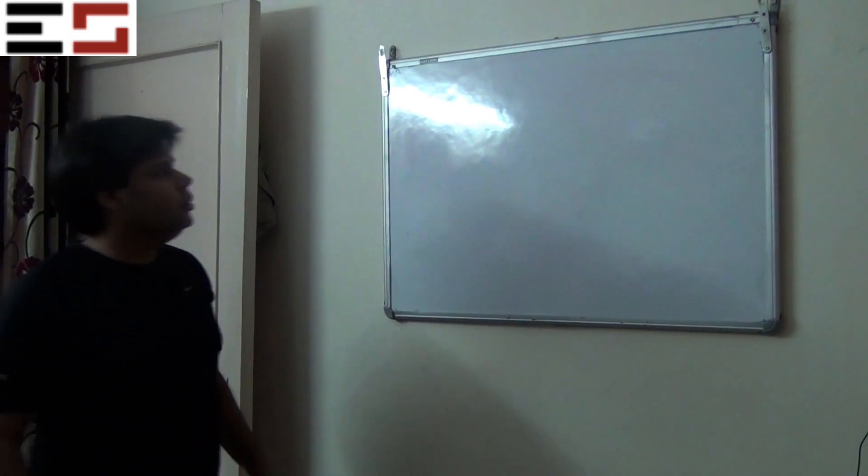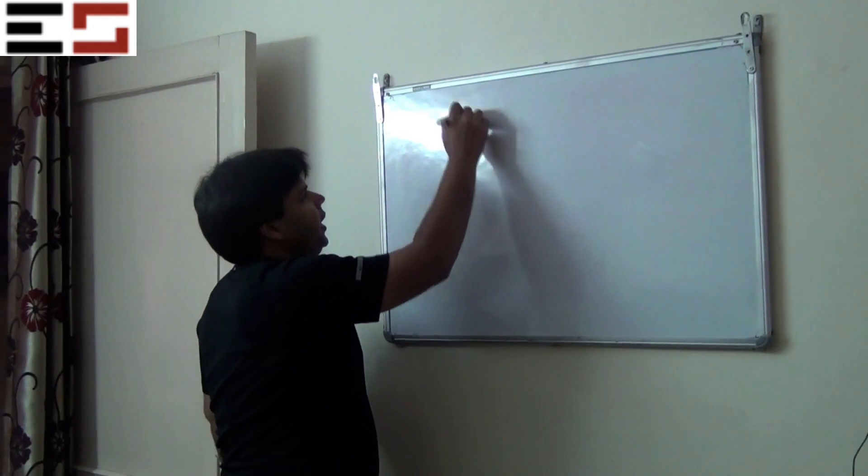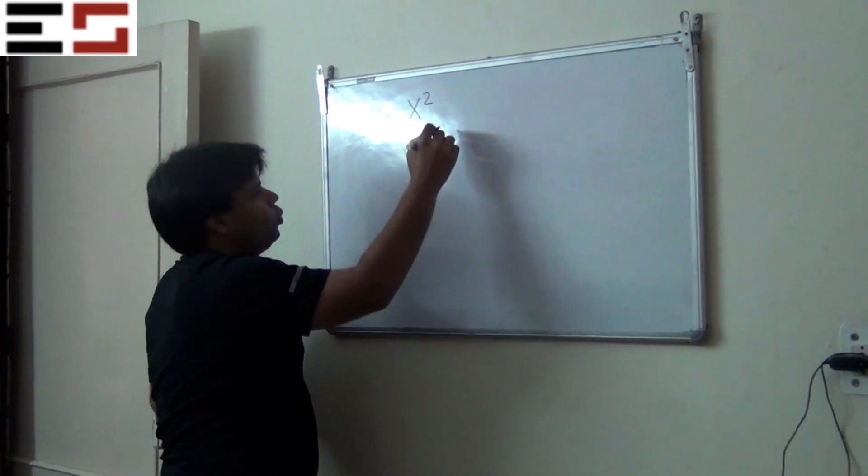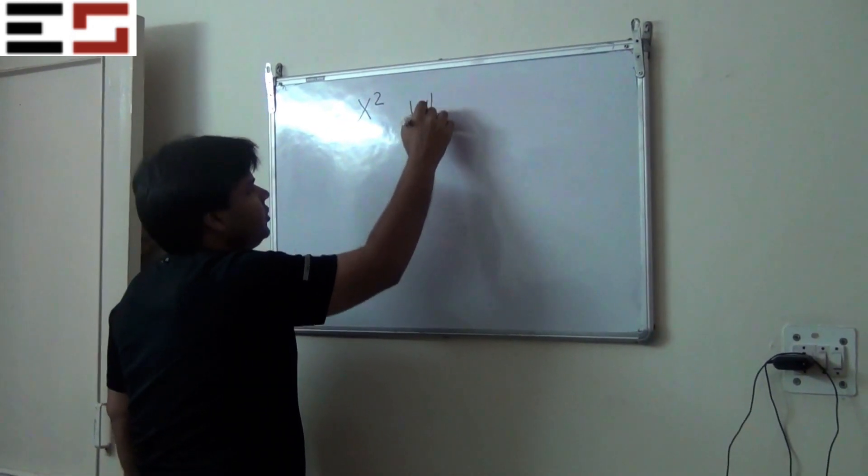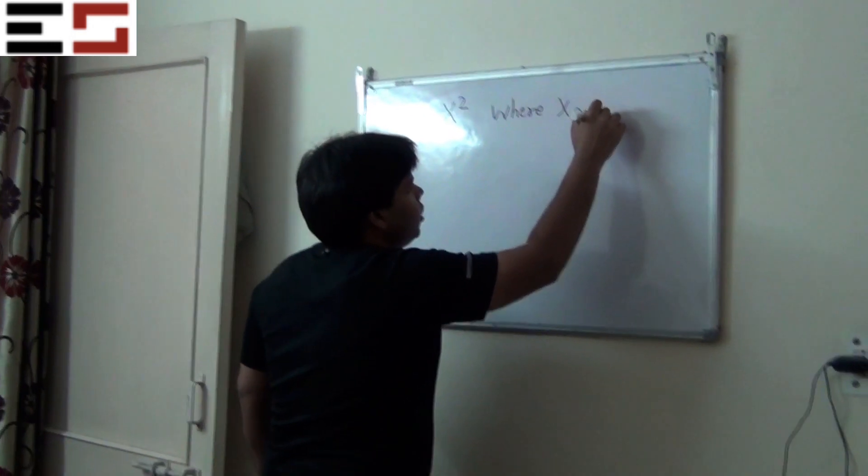Now what we're going to do is we're going to learn how to find the PDF of x squared where x is uniform 0 1.